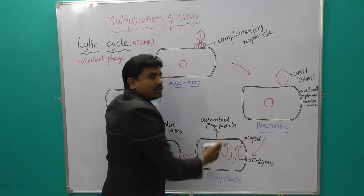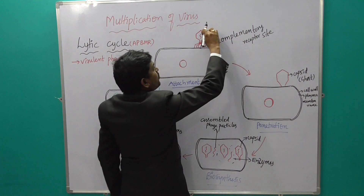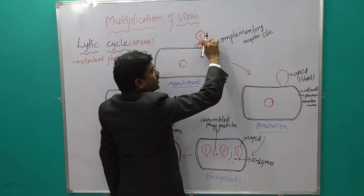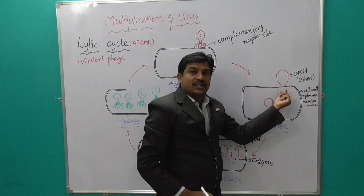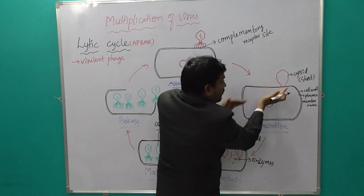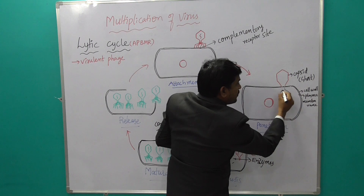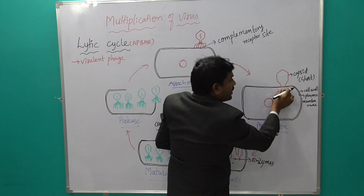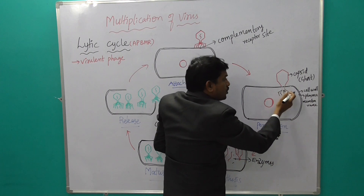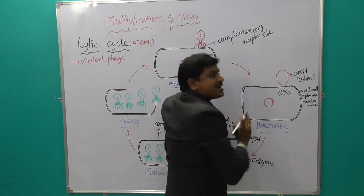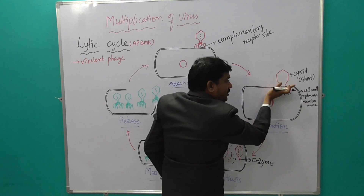The next stage is Penetration. The tail sheath of the bacteriophage contracts slowly. After contraction, the tail fibers and tail sheath enter through the cell wall and plasma membrane, penetrating into the cytoplasm of the E. coli bacteria. The tail part enters within the E. coli bacteria.